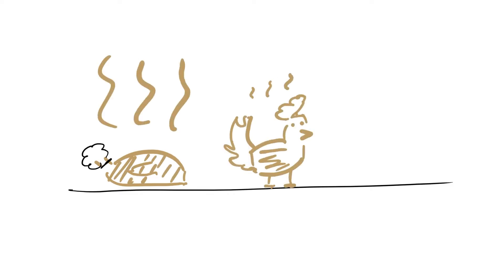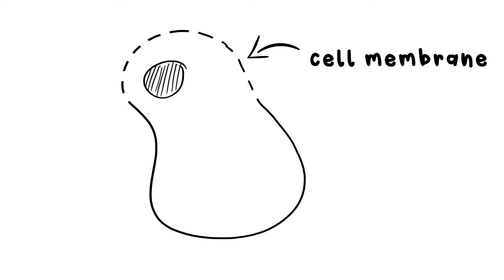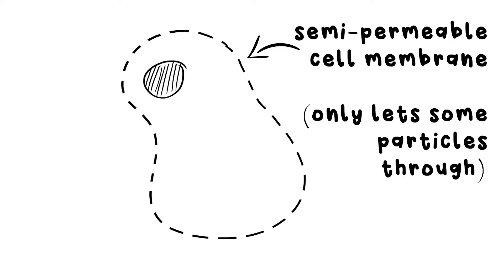Diffusion is one of the most important things that happens in biology, as it's a way to make sure that things are nice and balanced in your body. You probably know that the surface of your cells is called the cell membrane, but what you might not know is that it's semi-permeable. If something's permeable, it just means that things can go through it. But the membrane on your cells is semi-permeable, as it lets some things pass through it, but not others, due to the holes in it being very small.